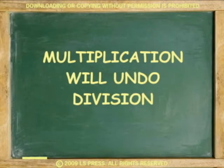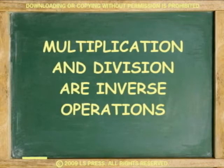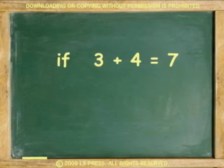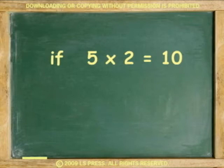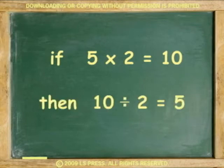Also, multiplication will undo division. So multiplication and division are inverse operations. If I say that 3 plus 4 is 7, then 7 minus 4 is 3. If I say 5 times 2 is 10, then 10 divided by 2 is 5.